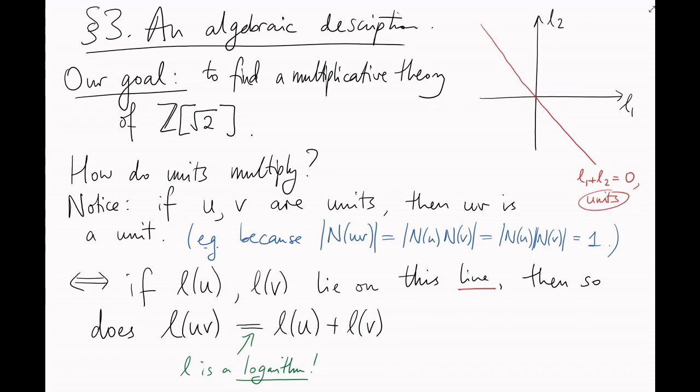In other words, let's try and see this from another perspective. If L of u is here, representing the unit u, and L of v is here, representing v, then their vector sum, which is this plus this, also represents a unit, u times v.